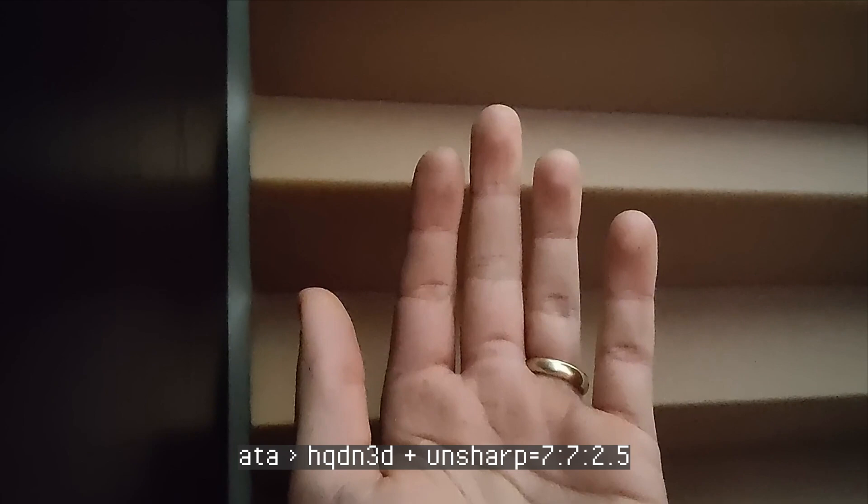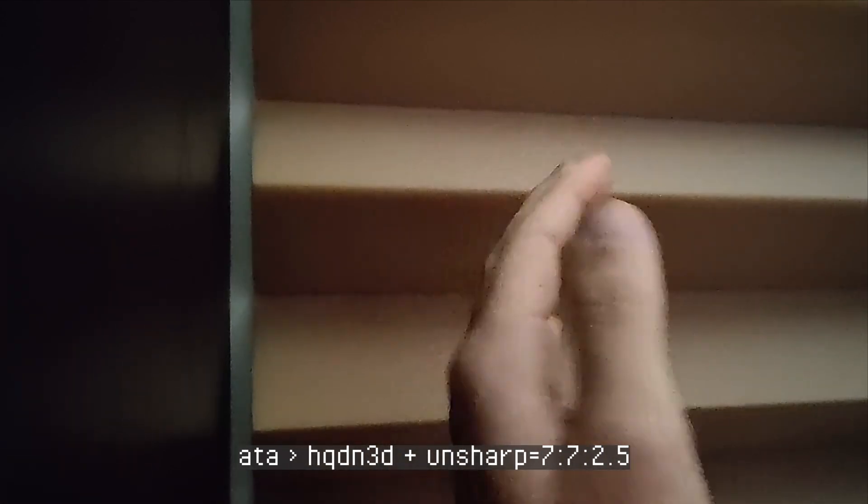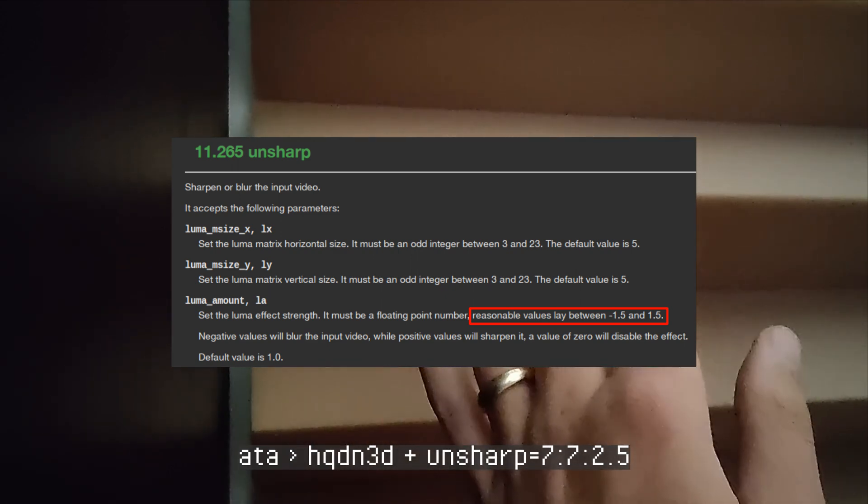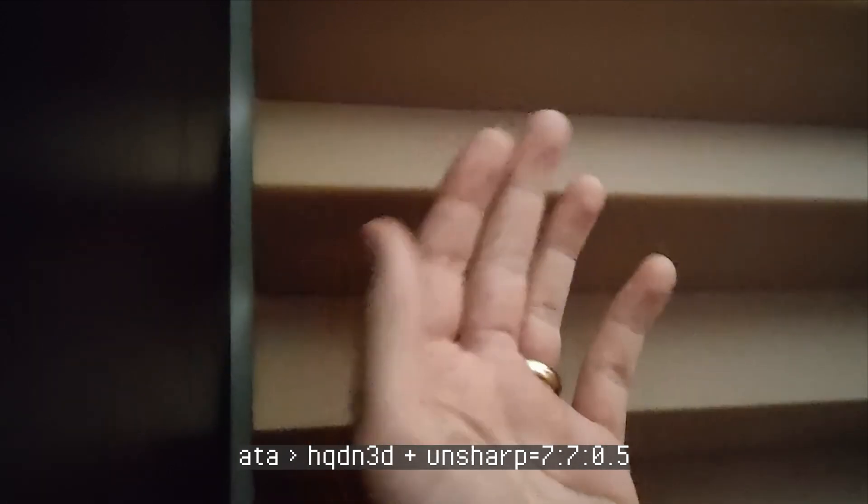And as expected, that looks pretty bad. Even in the documentation for FFmpeg, it's recommended to choose a value between negative 1.5 and 1.5, so let's roll with 0.5 to dial that back a hair. Okay, that looks pretty good.